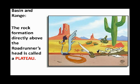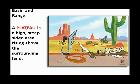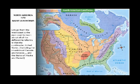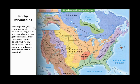The basin and range landform has many plateaus. In the background you can see plateaus — notice the steep cliffs going all the way up and flattened land at the top. These could be very small or very large. Any word you see in red is a definition, so you have to know the meaning of that. This is a plateau — steep sides going up, flattened at the top. A plateau is a high, steep-sided area rising above the surrounding land. You will be tested on this.